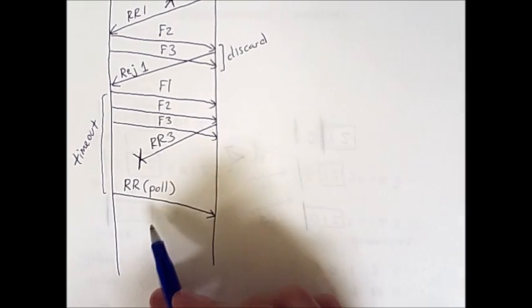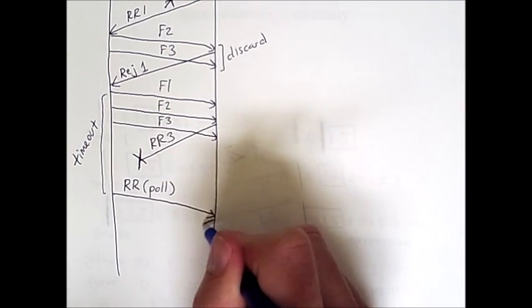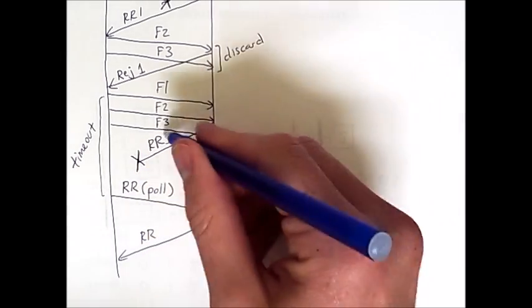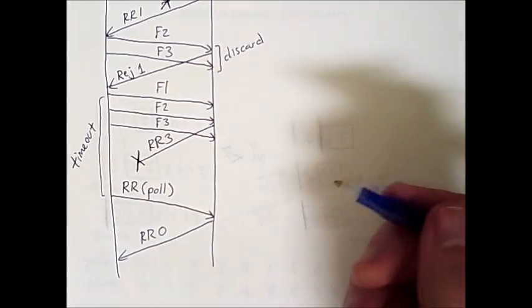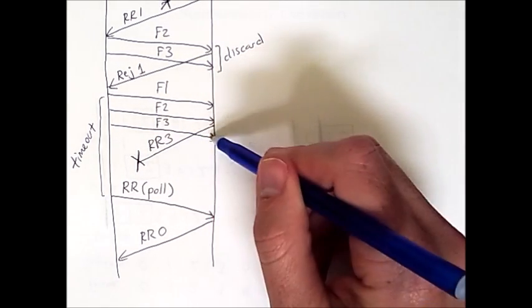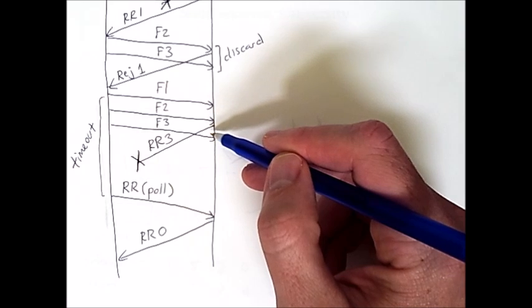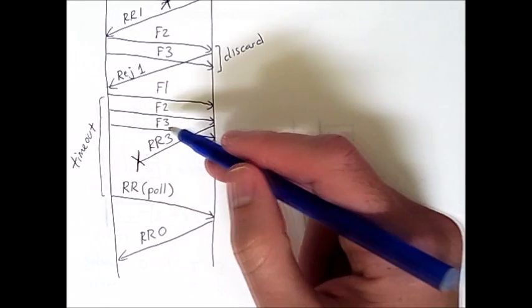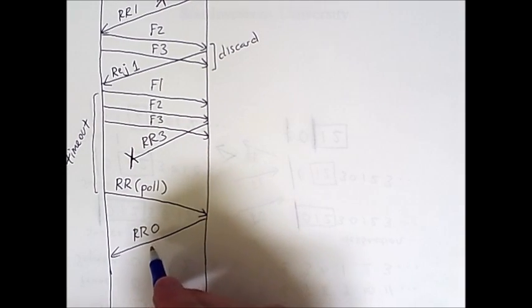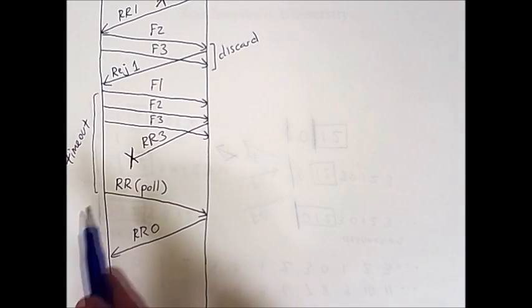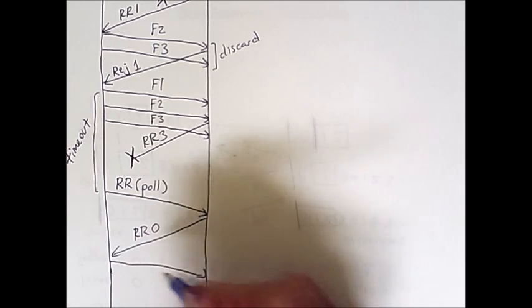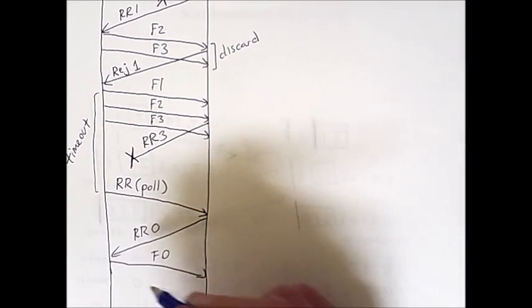Now once the destination receives this, it will send its own ready-to-receive frame with a value of 0. The reason for this is that the last frame that the destination successfully received was frame 3. So the next sequence number is 0 because we wrap around from 3 back to 0. Once this ready-to-receive of 0 is received, the source is able to begin transmission from frame 0 and continue on with more frames as before.